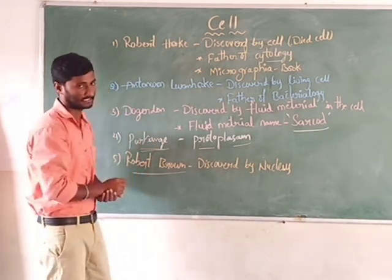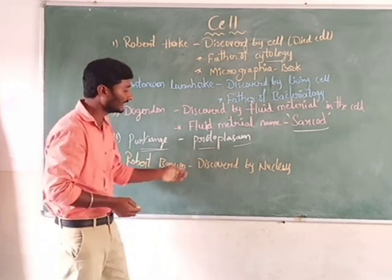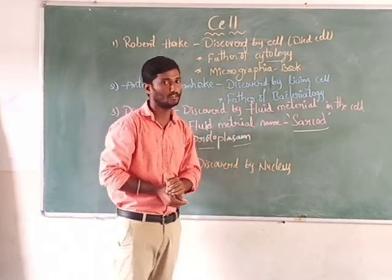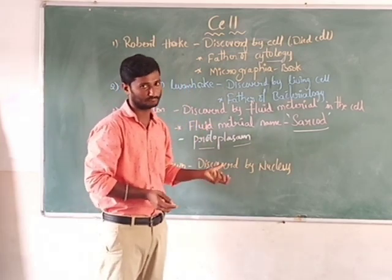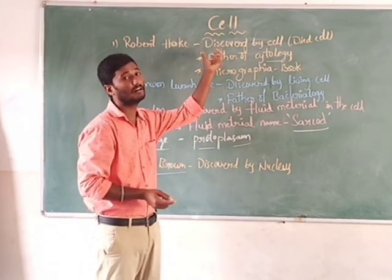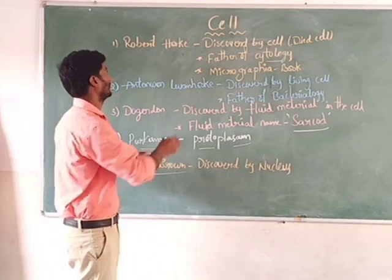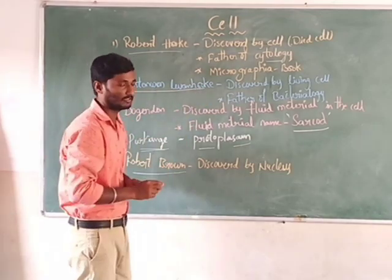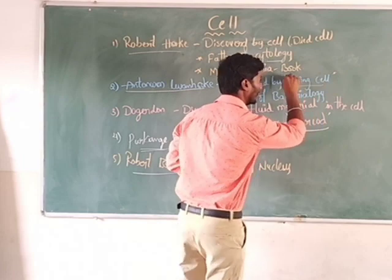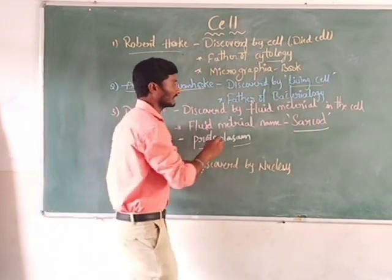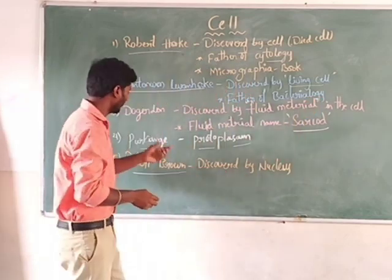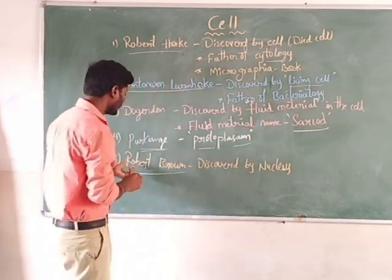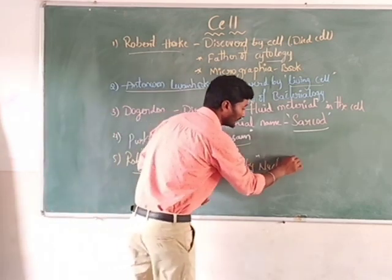Robert Brown scientist discovered the nucleus in the cell. To summarize some important scientists related to cell: Robert Hooke discovered the dead cell; Antonie van Leeuwenhoek discovered the living cell; Dujardin discovered the fluid-like material; Purkinje gave the name protoplasm; and Robert Brown discovered the nucleus.